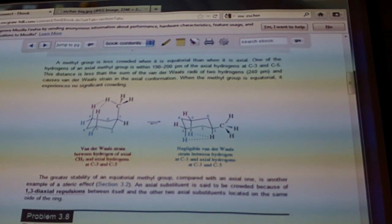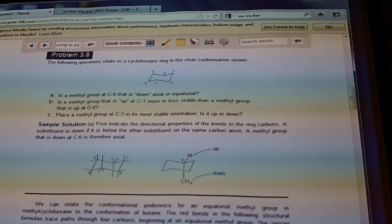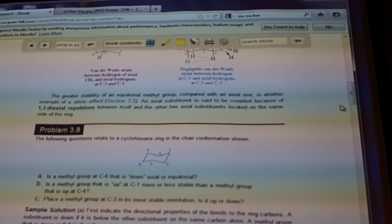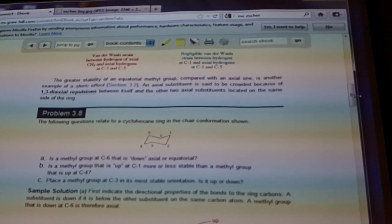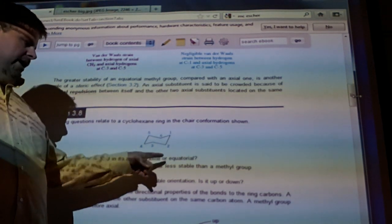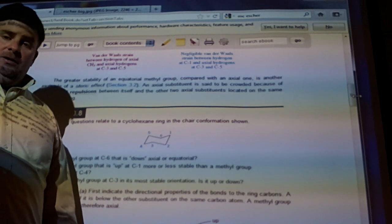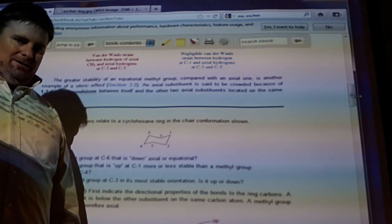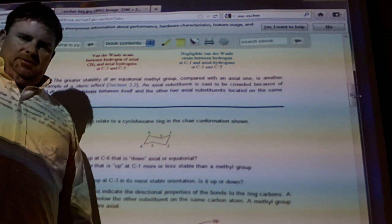So let's do the next problem, 3.8. Just point this out for you. 3.8 is a methyl group at C6 that is down, axial or equatorial. That is down. Because there's two relationships here.